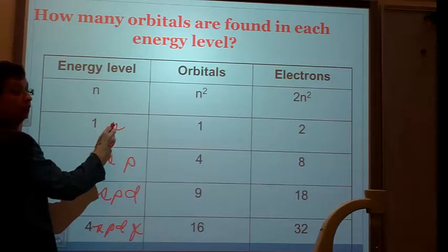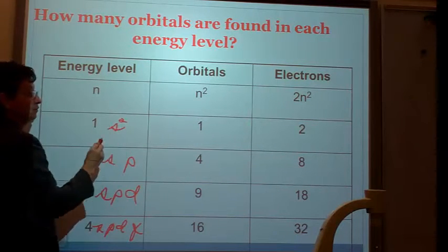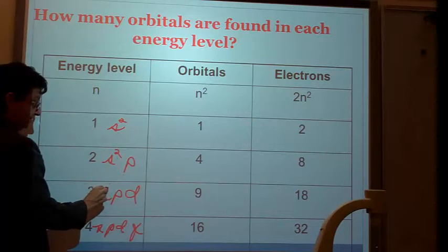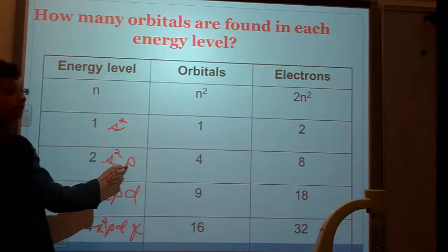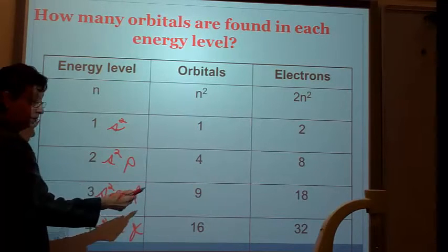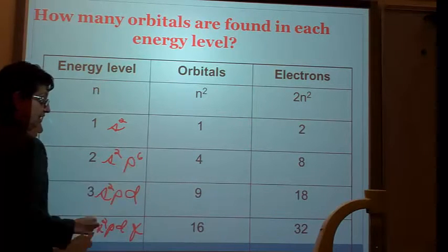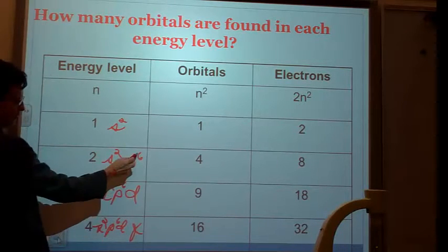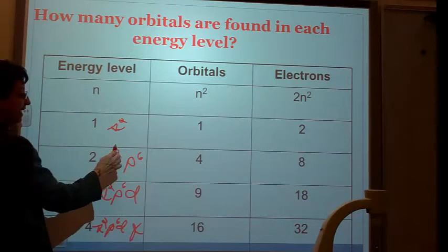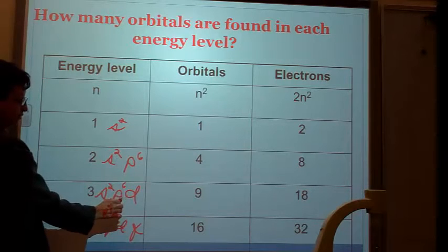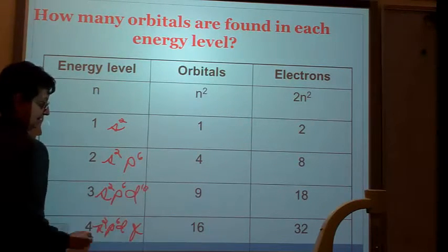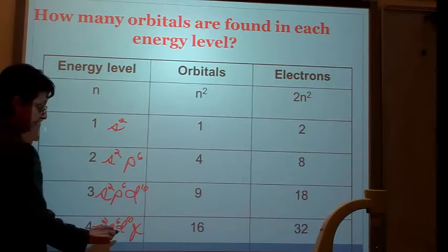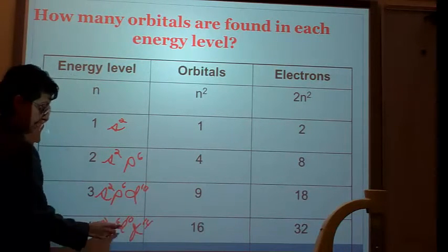We know that in energy level S, we can put a maximum of two electrons. So, two for every S. Two for every S. In the P, there's three orbitals, therefore, six electrons. I'm going to put a maximum of six electrons in every P. And I'm going to represent it as a superscript. And I'm going to be able to put ten electrons in the D because there are five orbitals, so ten electrons. And a total of 14 electrons in the F.